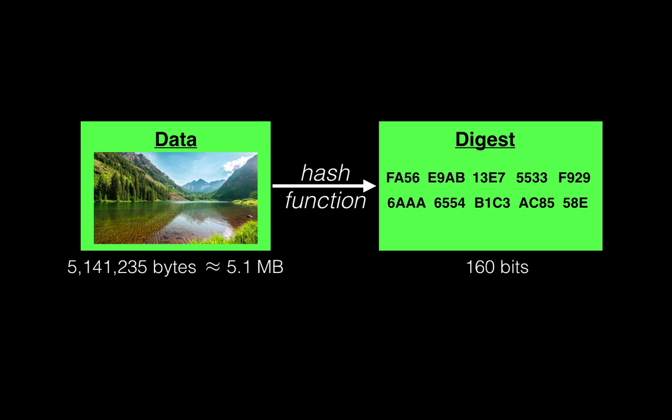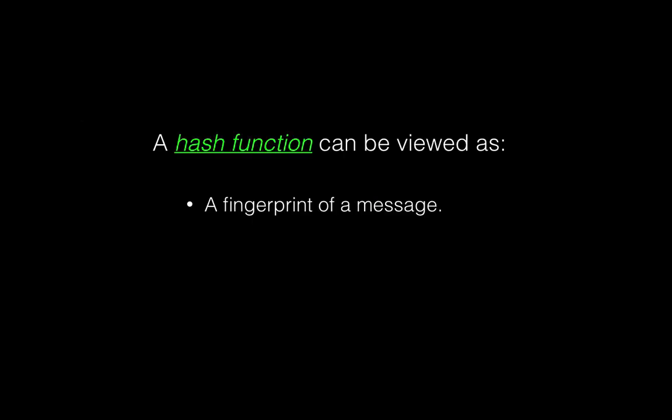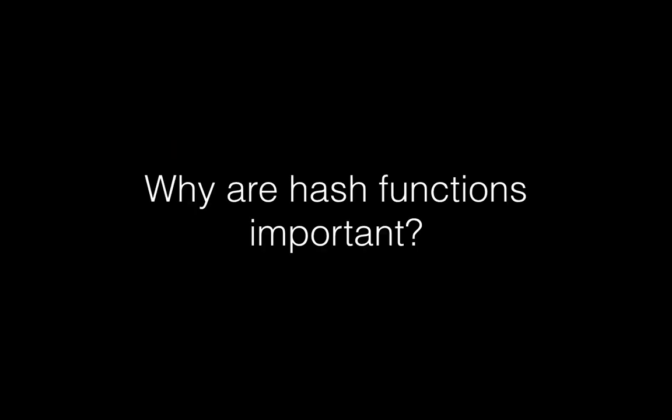For now, we're just going to look at the general ideas of what hash functions are. As I mentioned, think of a hash function as a fingerprint of the message or file you're trying to hash. That hash or fingerprint is thought of as a unique representation of that message. You might wonder: why are hash functions important? Why do we care about transforming a very big file or message into something smaller? There are a few applications of that.